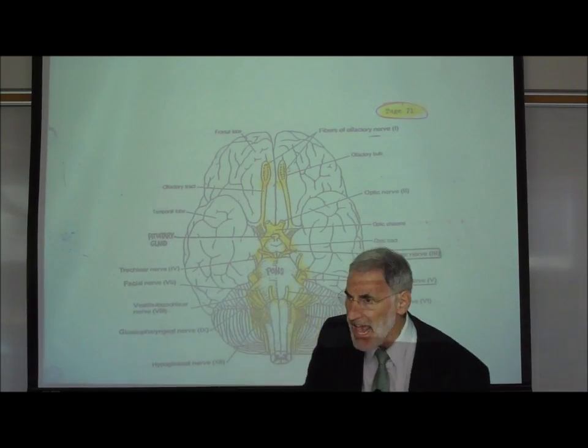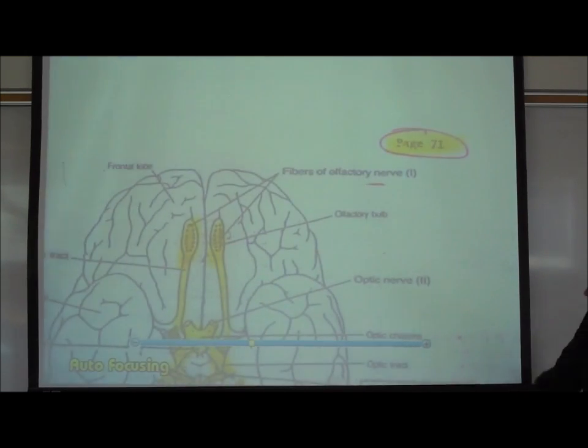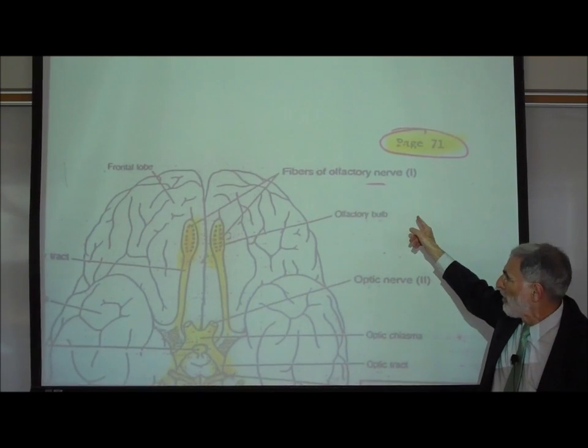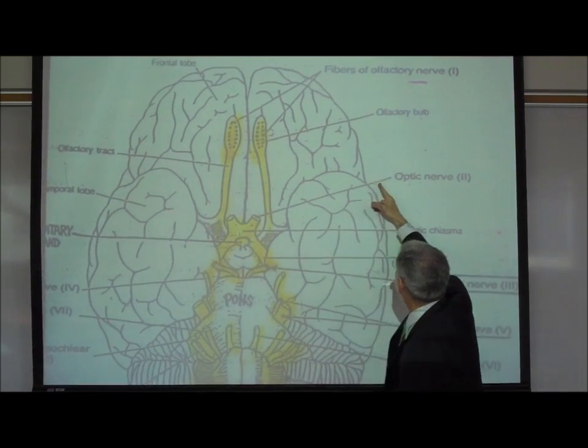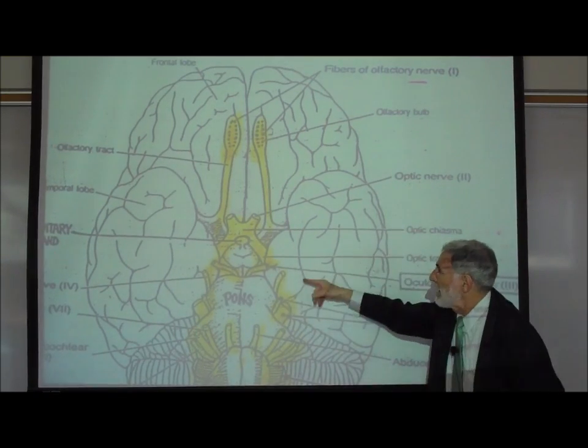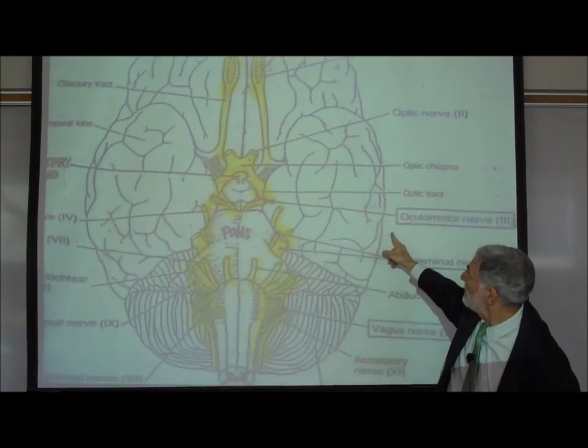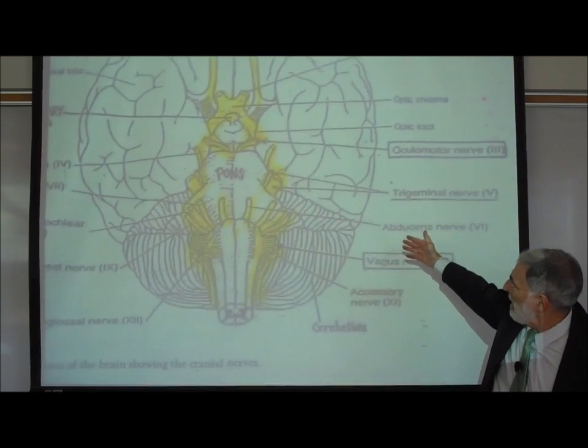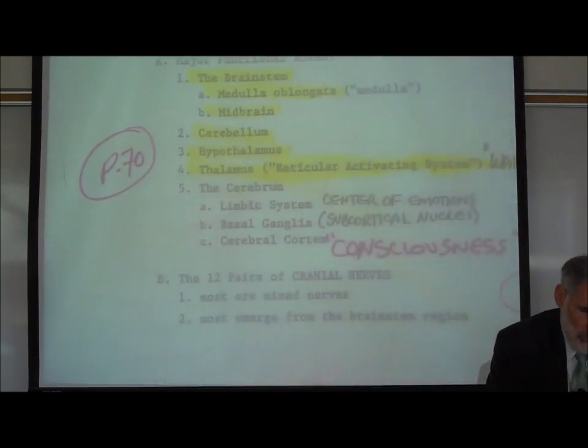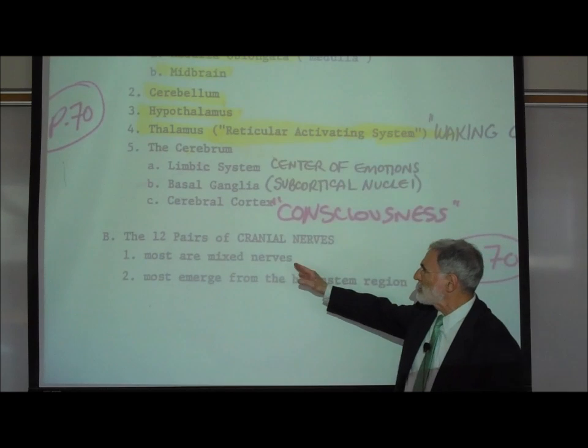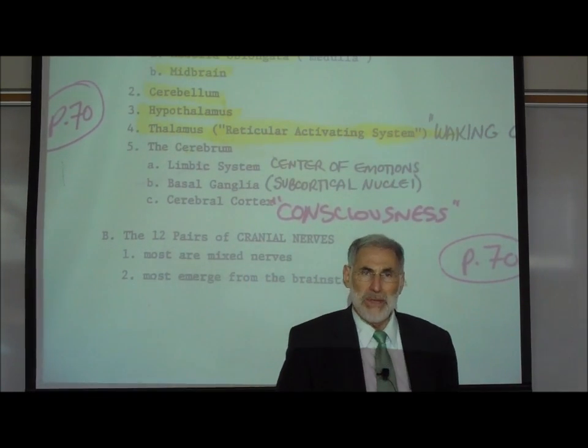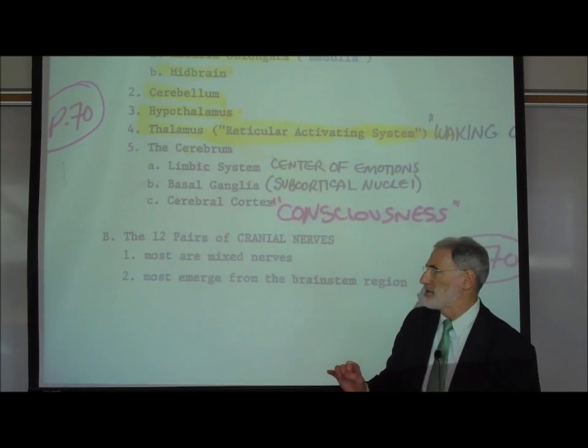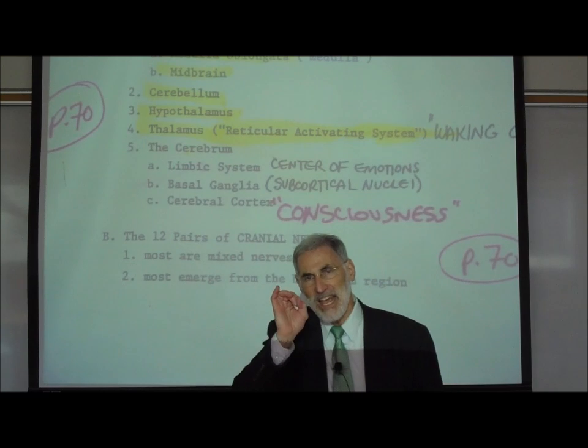Each of these cranial nerves not only is assigned a number but has a name. You can see that this first pair are the olfactory nerves, Roman numeral cranial nerve number one. The second pair, right and left, are the optic nerves, cranial nerves Roman numeral number two, and then come the oculomotor cranial nerves, right here right and left, cranial nerve number three, and so on down the line. On the bottom of the previous page, we wrote that most of these cranial nerves are mixed nerves.